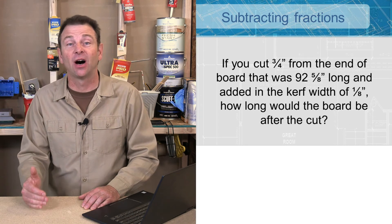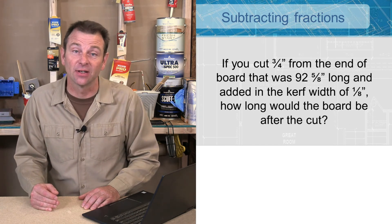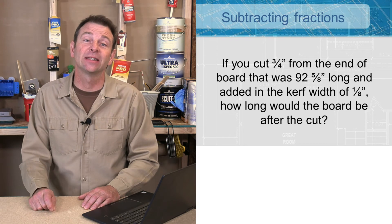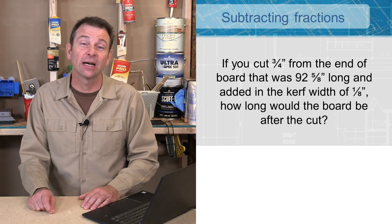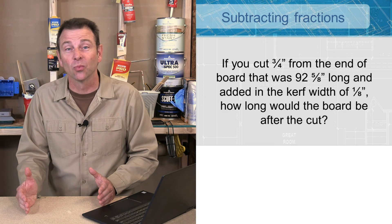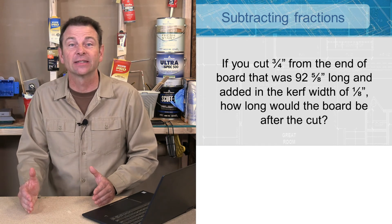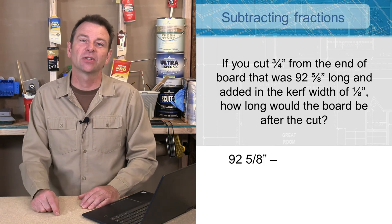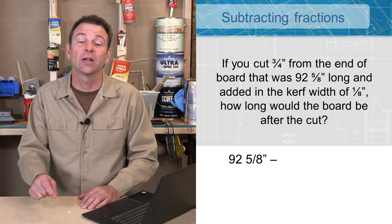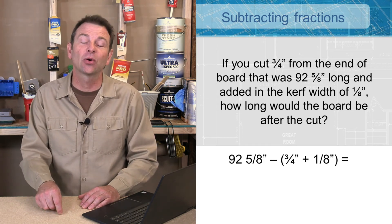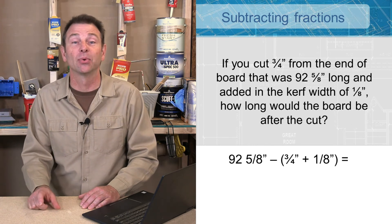Here's a problem dealing with subtracting fractions. If we want to take three-quarters of an inch off of a board that is 92 and five-eighths inches long, and we take into consideration the eighth-inch kerf of the blade when it's cut, what is left of that board once we do this operation? Let's look at this in math terms. We start with our 92 and five-eighths inch board and we want to subtract a three-quarter plus one-eighth dimension from that board.